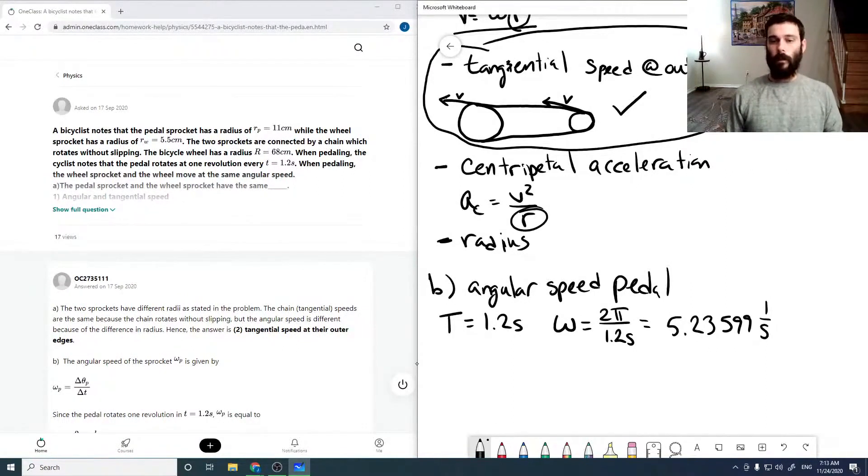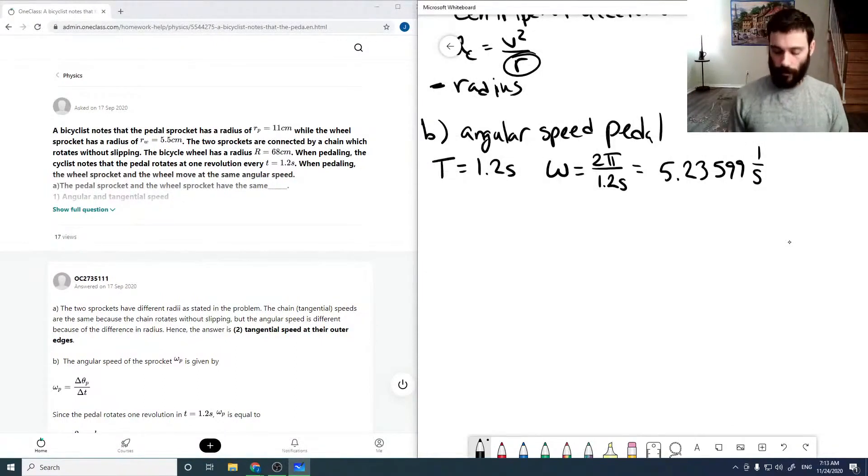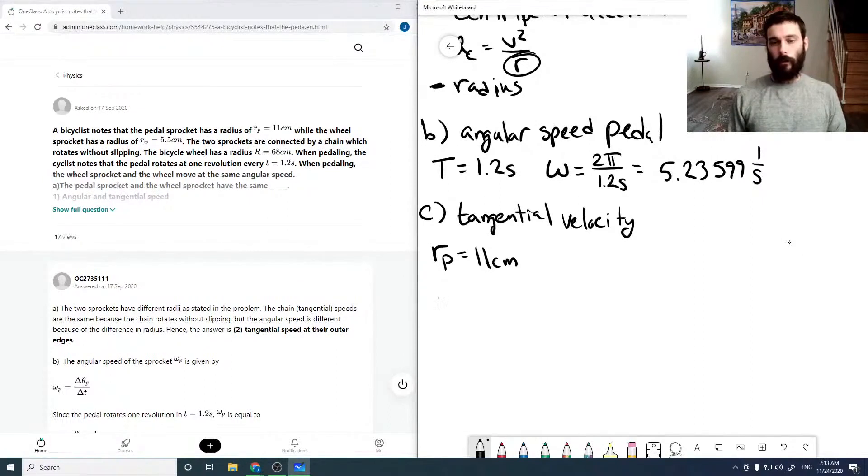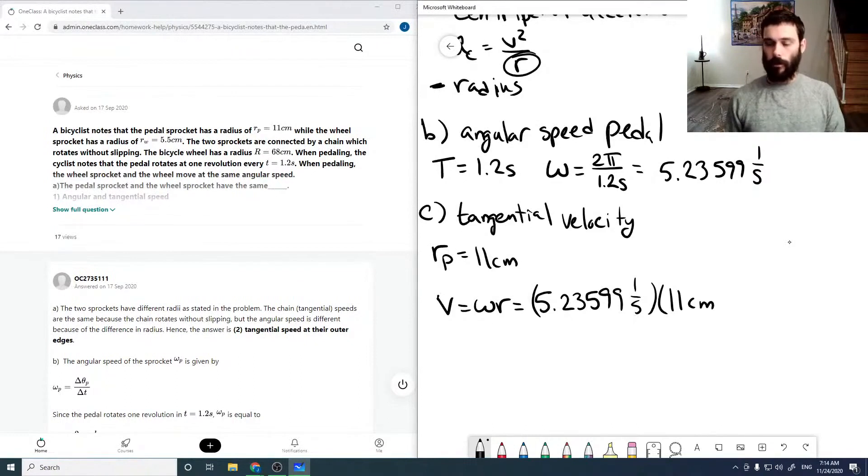And then C asks us to solve for the tangential velocity. So, recalling that the R for the pedal is 11 centimeters, then V equals omega R, which equals 5.23599, 1 over seconds, times 11 centimeters. We want to convert between centimeters and meters, so that is 1 meter per 100 centimeters, and we get 0.57596 meters per second.